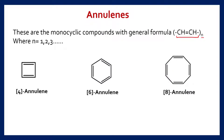Let us start with the definition of annulenes. Annulenes are monocyclic compounds with the general formula [CH=CH]_n. From this general formula we can see that whatever the number of carbon atoms we have in annulenes, we have an even number of carbon atoms. Also, all the carbon atoms in annulenes are sp2 hybridized. To write their names, the number of carbon atoms involved in the skeleton are written in square brackets, followed by a dash and the word annulene.